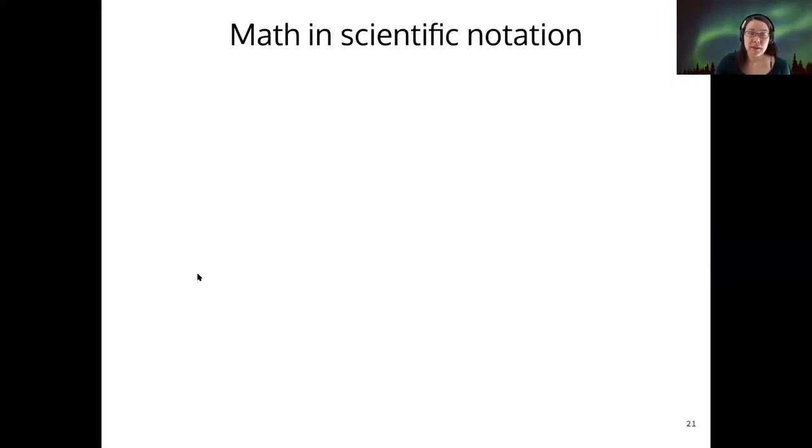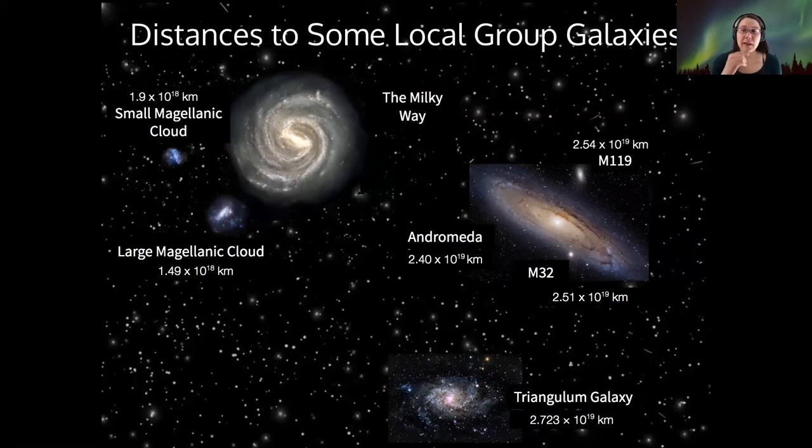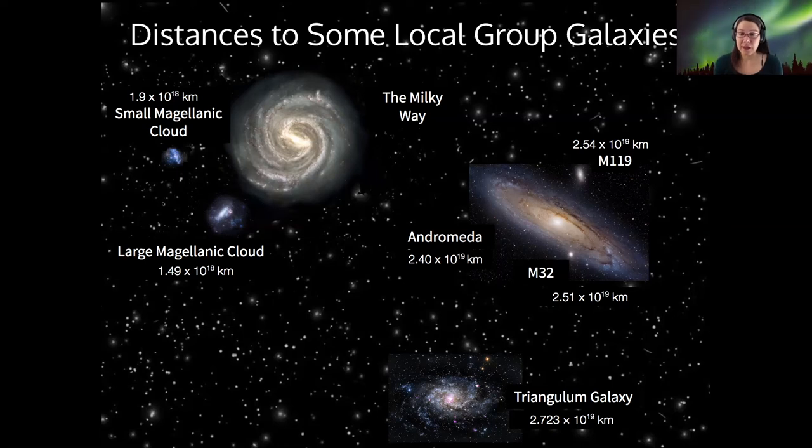Alright, actually one more thing I'd like to point out here is that the unit of kilometer that we've been talking about, it in itself hides a few factors of 10. So a kilometer is 1000 meters. And so if I wanted to express these in meters, I would nix the K from the kilometer and add those three orders of magnitude to my exponent.